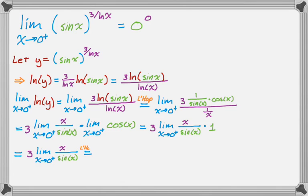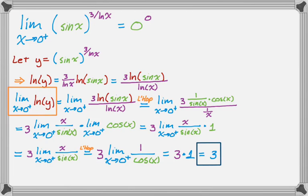It's a L'Hopital situation, right? Because we have 0 over 0. So, 3 times the limit as x approaches 0 from the right of... The derivative of the top is 1. The derivative of the bottom is cosine. And then we know that cosine approaches 1. So, 3 times 1, which is 3. And I put a box around the two things we now need to equate.